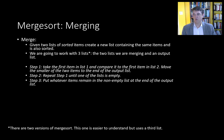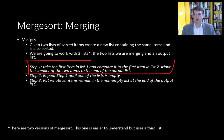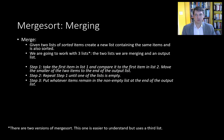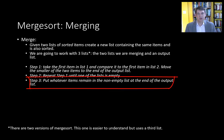Let's set this up more formally. Merge is going to do the following: given two lists of sorted items, it's going to create a new list containing the same items that is also sorted. We're going to work with three lists — the two lists we are merging and the output list we're going to return. Step one: take the first item in list one and compare it to the first item in list two. Move the smaller item to the end of the output list. Repeat this until one list is empty, then put whatever remains in the non-empty list at the end of the output.